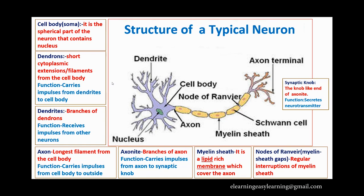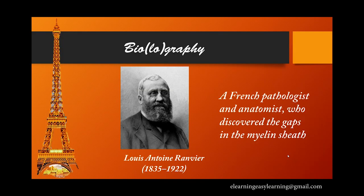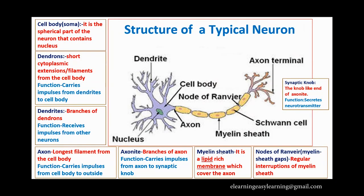Now we will learn about biological terms and their origins. These biological names are usually given after the name of a scientist, the name of a place, or they have Greek or Latin origins — that is why these terms are sometimes unfamiliar to us. Nodes of Ranvier, for example, are named after the scientist Louis Anton Ranvier, a French pathologist and anatomist who discovered the gaps in the myelin sheath.